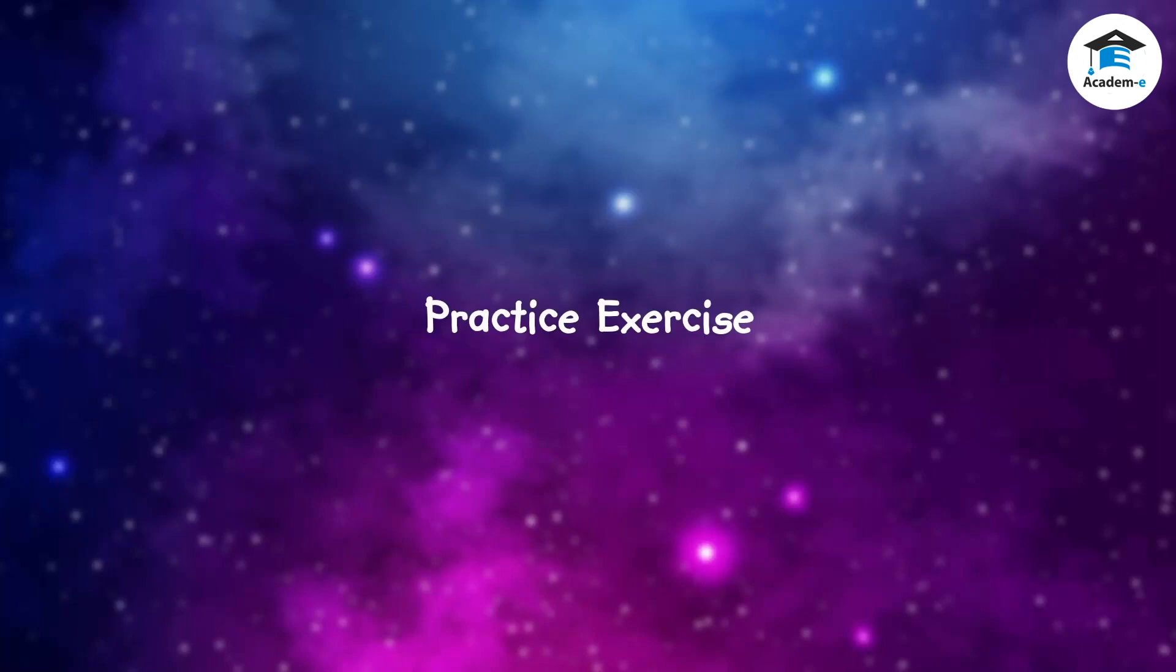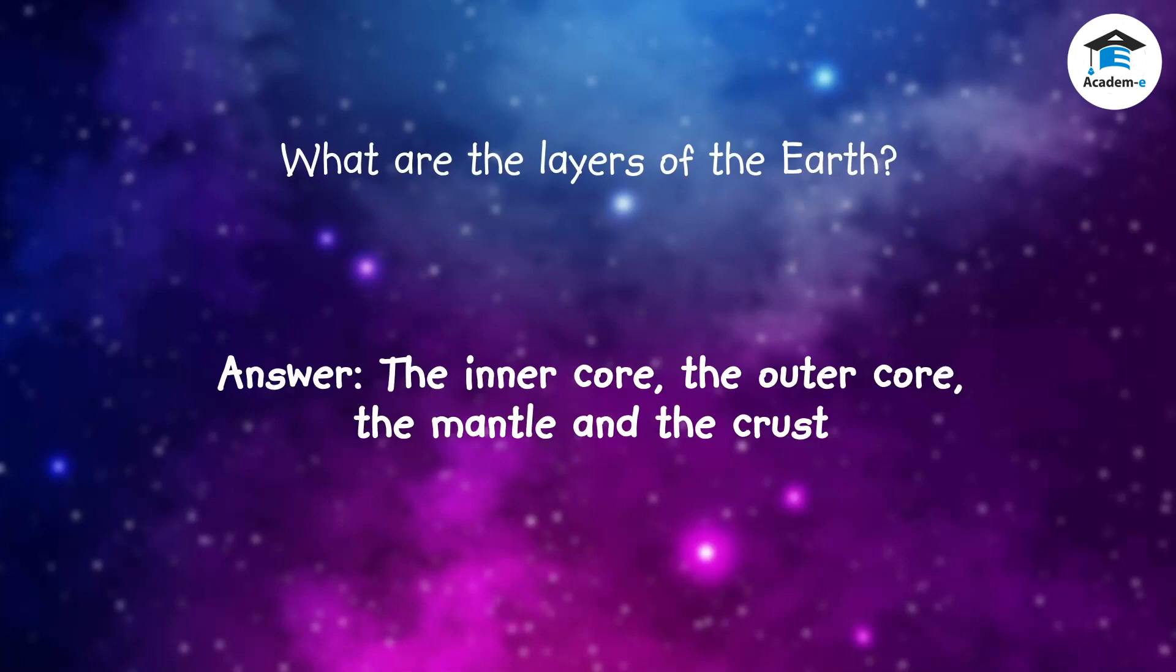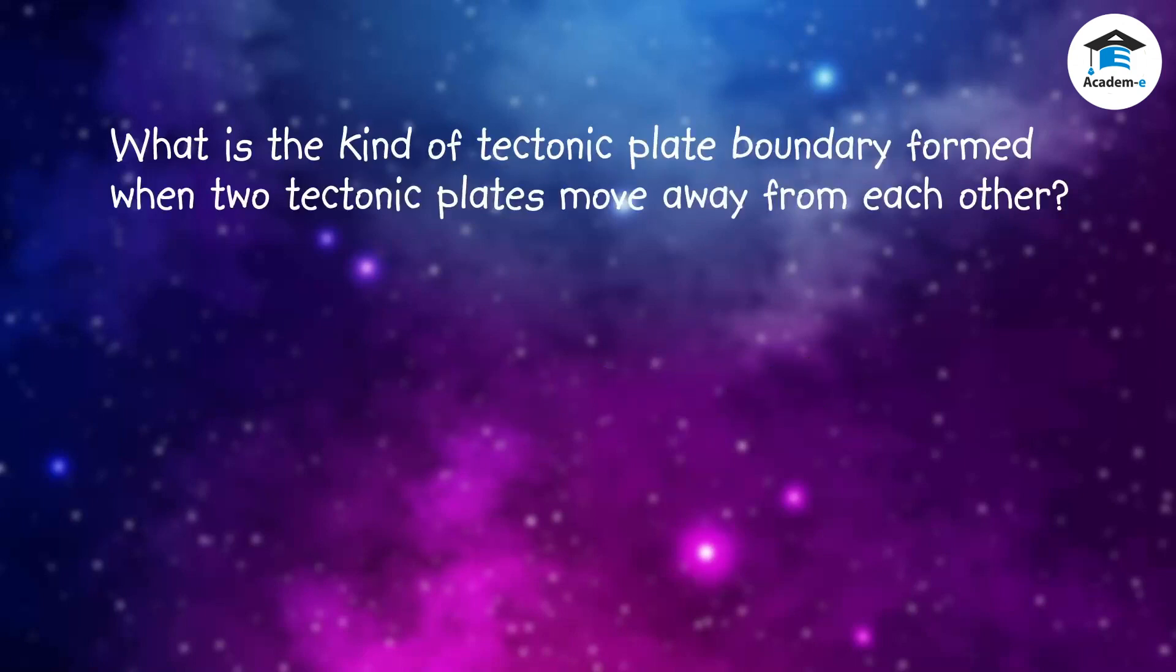Practice exercise. What are the layers of the Earth? The inner core, the outer core, the mantle, and the crust are the layers of the Earth. What is the kind of tectonic plate boundary formed when two tectonic plates move away from each other? The answer is divergent plate boundary.